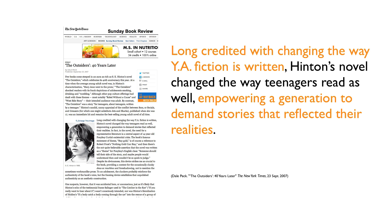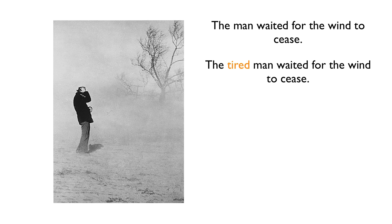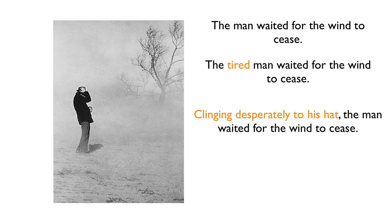Now that you've seen other people writing with participles, let's try it on our own. Let's do some exercises. I'm going to start by showing you a picture — an image from the archive of the Great Depression photos. Here's a simple sentence: 'The man waited for the wind to cease.' How could we make this sentence better with some participles or participial phrases? An easy thing to do would be to just add a participle — 'tired' in front of 'man.' Now we've got 'a tired man.' There's a participle — comes from the verb 'to tire,' ends in ED. We could probably do better than that though. Let's try adding a whole phrase: 'clinging desperately to his hat.' Now here's a participial phrase that gives the man some action. He's doing something while he's waiting for the wind to cease. That enhances the imagery of what we've got going on in the original sentence.